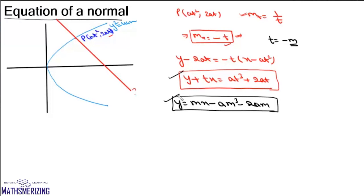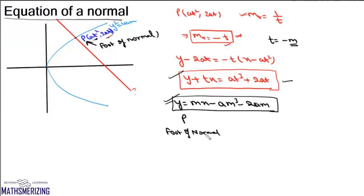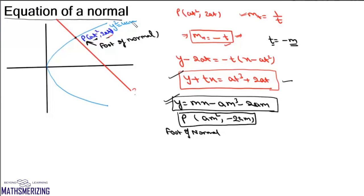This is the equation of normal for the first form y² = 4ax. Given parameter t, we can write the point from which the normal is drawn and also its equation. If we have the slope of normal m, we can also write the equation of normal and the point of contact, called the foot of normal. Since t = -m, this foot of normal point is (am², -2am), which lies on the parabola y² = 4ax.